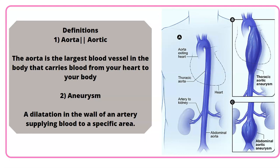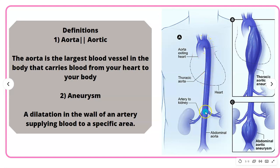The aorta is the largest blood vessel in the body that carries blood from your heart to the body. It carries blood from the heart to the rest of the body by distributing this blood into other smaller arteries.